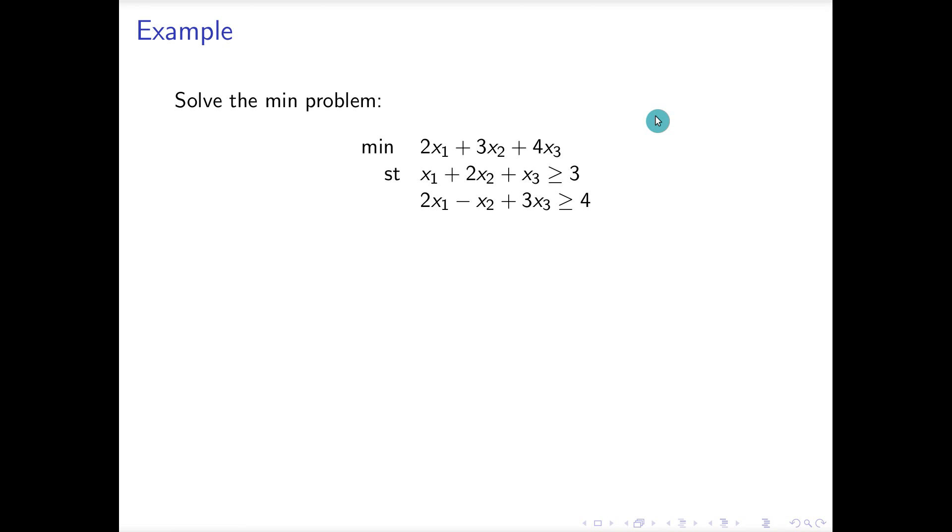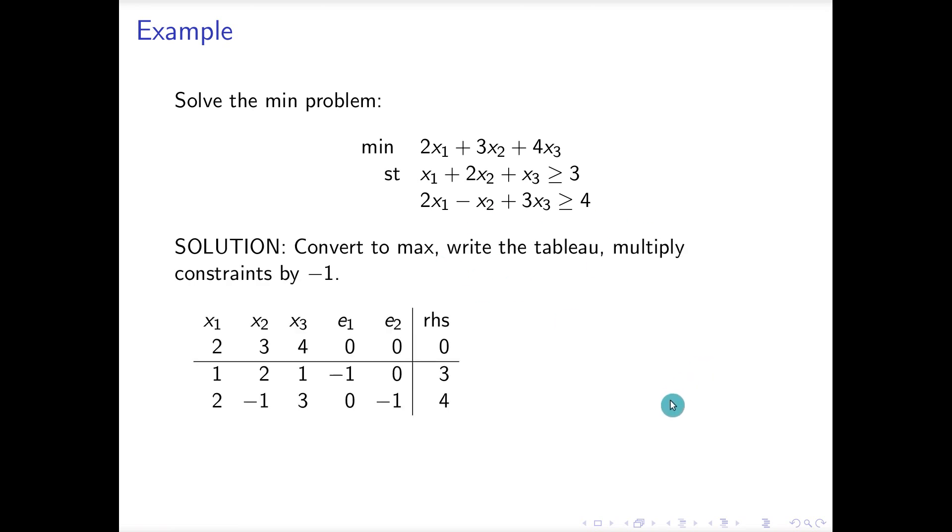Here we go. Solve the min problem. You'll notice that these are positive here, so when I convert them to a max, I'm going to negate them, and then when I bring them over to the z value or on the other side of the equation, they become positive again for the tableau. So here's my tableau. Multiply the two rows by negative one and here we go, let's get started.